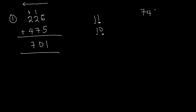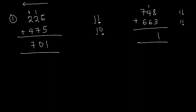Let's look at another example: 748 plus 663. We add 8 and 3: 8 plus 3 gives 11, so we write the first 1 and carry the next 1. Then 1 plus 4 gives 5, plus 6 gives 11 — write 1, carry 1. Now 1 plus 7 is 8, plus 6 is 14. Since there's no further column, we write 14, giving a final answer of 1411.